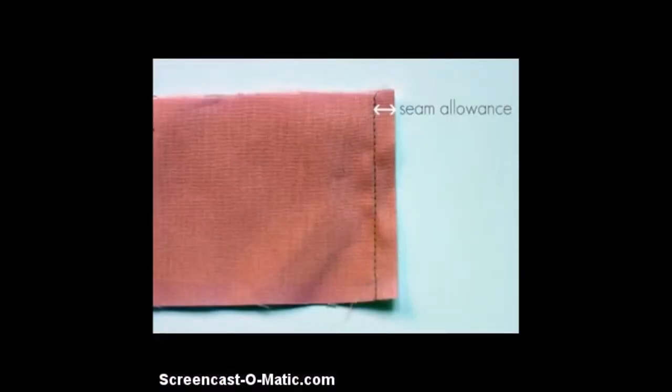As you see here, this is on a piece of fabric and the seam has been sewn with the seam allowance right here from this arrow to this arrow. So it's from the stitching to the edge of your fabric, and that's what the seam allowance is.